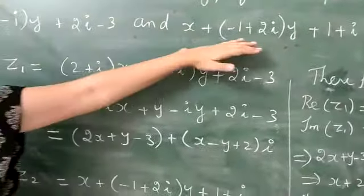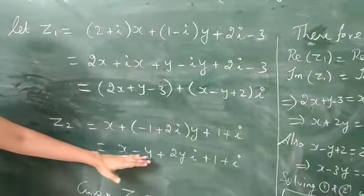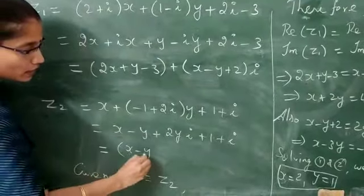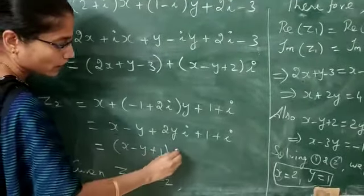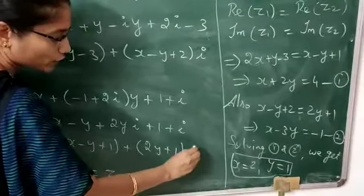Likewise, let the second number be z2. Here also collect the real and imaginary parts separately. The real parts: x minus y plus 1, and the imaginary parts: 2y plus 1 into i.